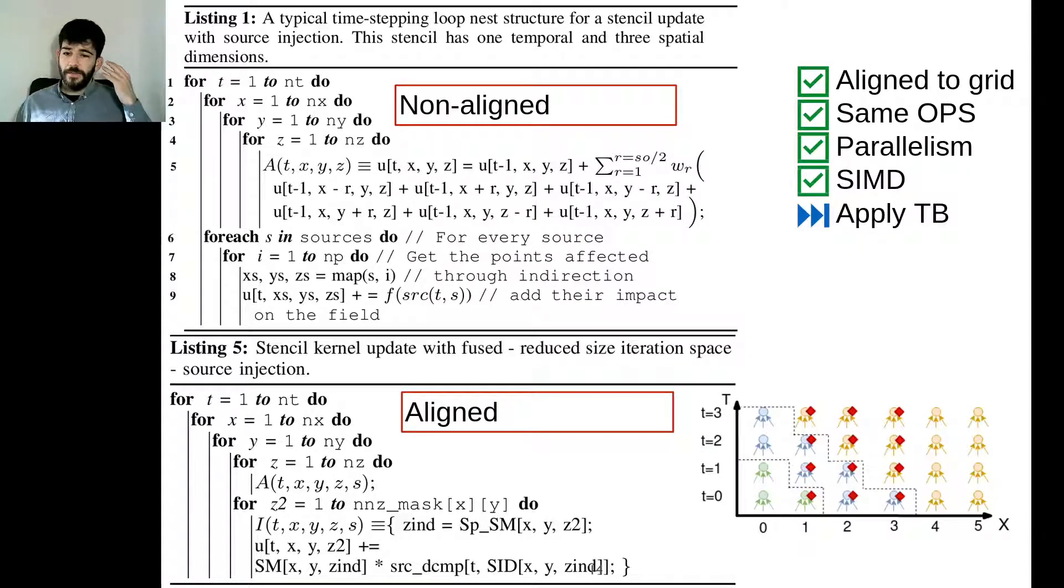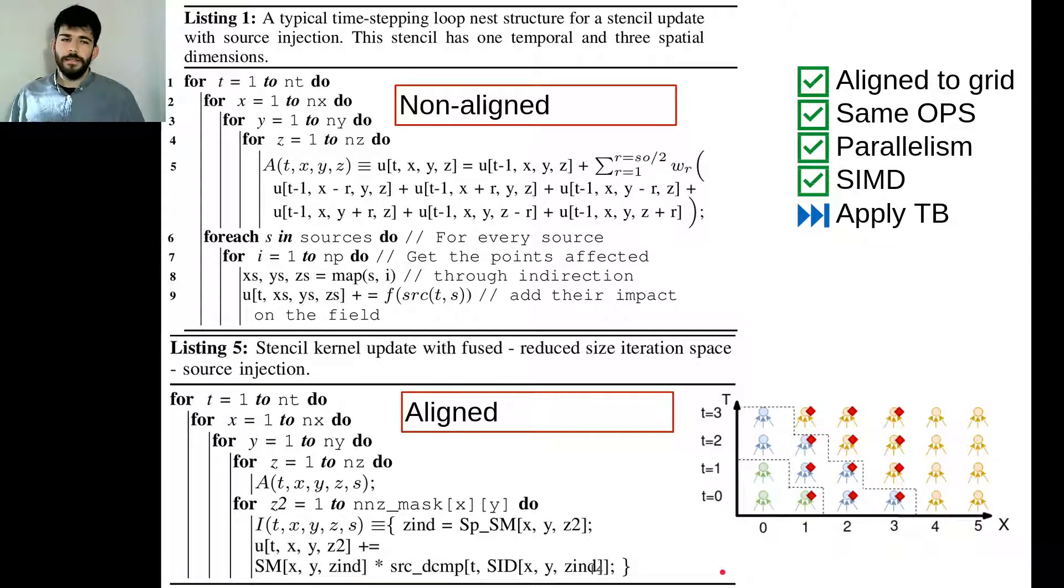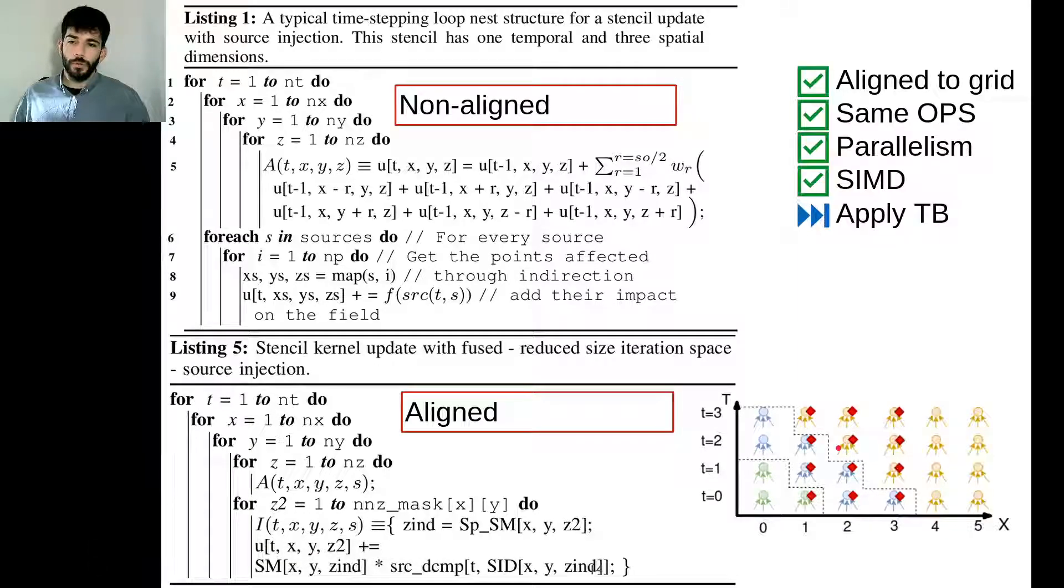We came from having two iteration spaces - the grid coordinates as well as the sources iteration space - while now we only have the grid coordinates injecting to our fields through the second z innermost loop. We have the same operation count and opportunities for parallelism and vectorization, and now it's time to apply temporal blocking that is now applicable because we have managed to align the effect of the sparse off-the-grid operators to the grid points.